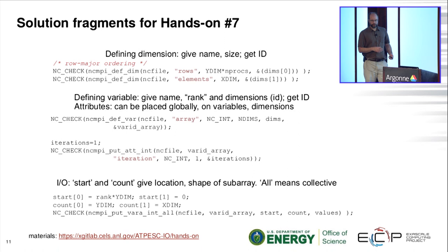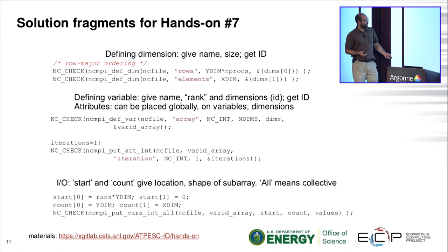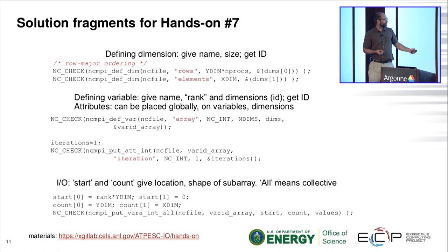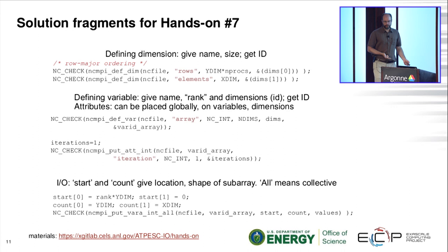Instead of dealing with sub-arrays and data types manually, we set up starts and counts. We think in terms of arrays - we know how big the overall array is because we described the variable earlier. Before writing variable data we have to switch from define mode to data mode. Then based on rank, we determine the starting offset - which column we'll be writing - and write out a Y-by-X patch of the array collectively. This is a chance for the library to do a lot of work on our behalf.